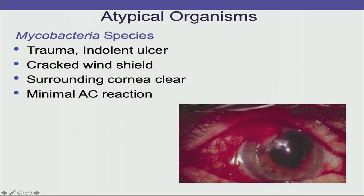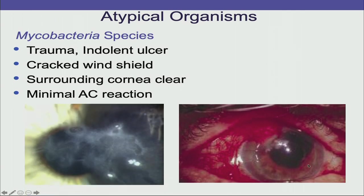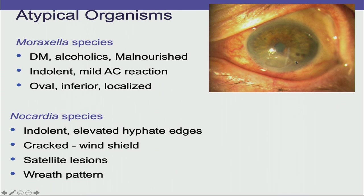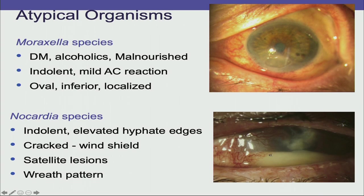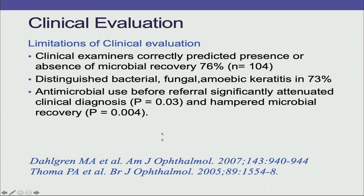Mycobacteria ulcers have a cracked windshield-like appearance with a clear surrounding cornea. They occur following trauma, are generally indolent, and have hardly any AC reaction. Moraxella ulcers tend to be inferior and oval, with little AC reaction and clear surrounding cornea; they are seen more in diabetics, alcoholics, and the malnourished. Nocardia presents as a flower-like wreath pattern with satellite lesions, indolent ulcers with elevated edges and cracked windshield appearance. Clinical evaluation can pick up the organism about 76% of the time; microbiology is still required in one-third of cases.